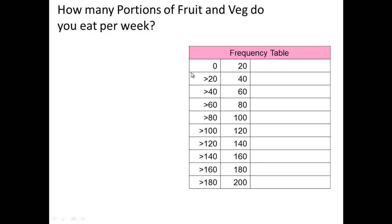When I talked about class intervals and wanting between 8 and 15, what I mean is these rows here are the class intervals. We've got 1, 2, 3, 4, 5, 6, 7, 8, 9, 10 — 10 is between 8 and 15. We don't want too few and we don't want too many, so somewhere between 8 and 15 intervals is good. We're going up in 20s — that's the size of the class interval.